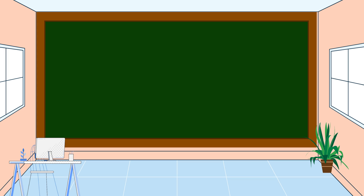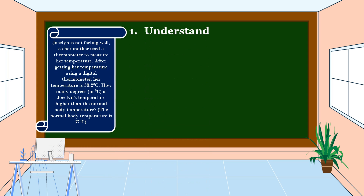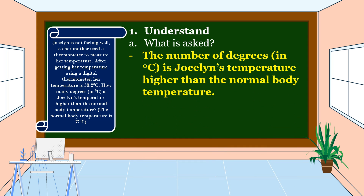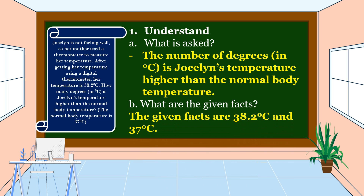We are going to use the four-step plan. First, we are going to understand the problem. We should know what is asked. What is asked in this problem? In this problem, it is asking for the number of degrees in degrees Celsius that Jocelyn's temperature is higher than the normal body temperature. The given facts are 38.2 degrees Celsius and 37 degrees Celsius.